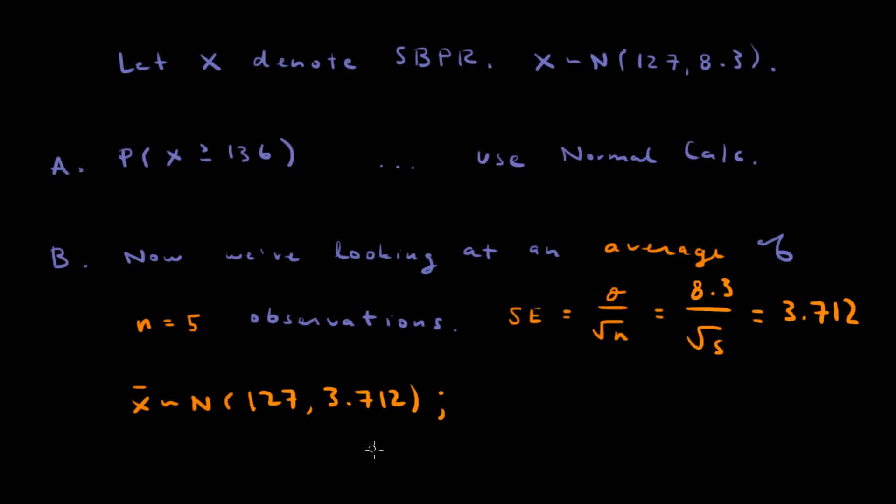And now we're asking pretty much the same question that was asked in A, the probability that X bar is greater than or equal to 136. And again, you can use the normal calculator to get this answer. Use that mean, use that as your standard error, greater than or equal to, and plug in 136.